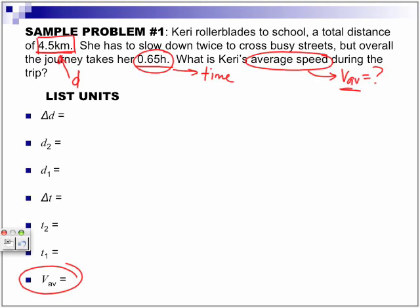Now let's fill in these units that we have. Our D2, our final distance, is the school. Keri rollerblades to school, so her distance to the school is 4.5 kilometers. But from home, we're assuming she's rollerbladed from home, it would be represented by zero.